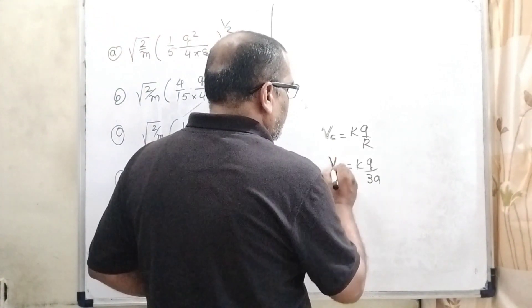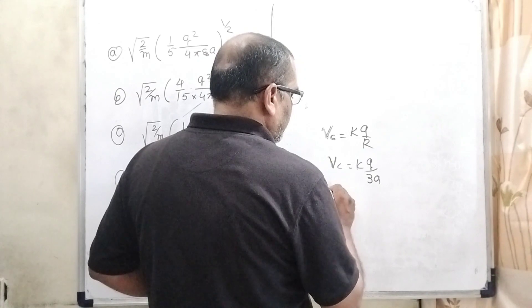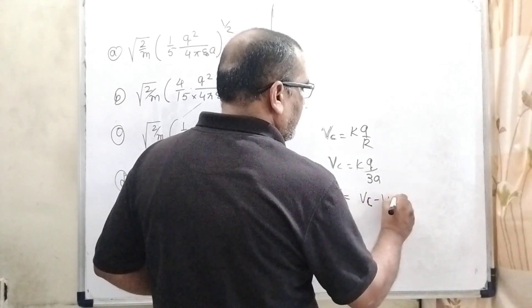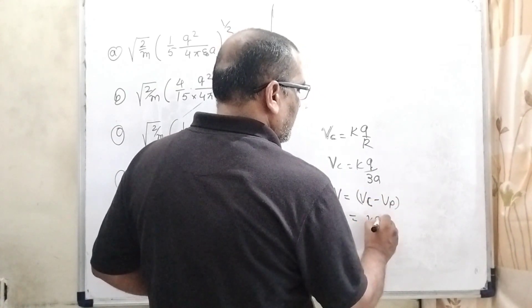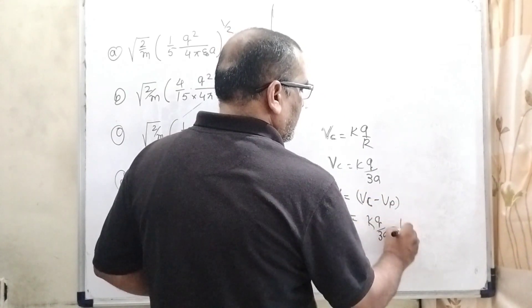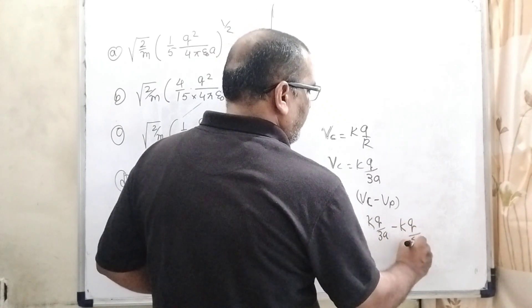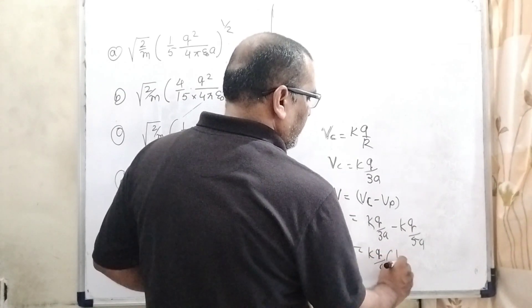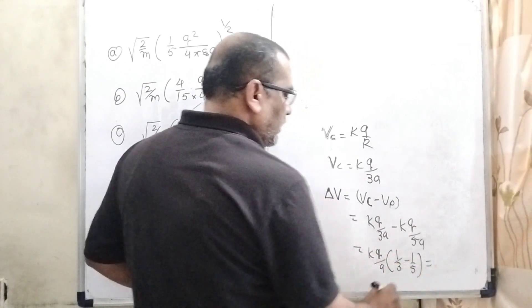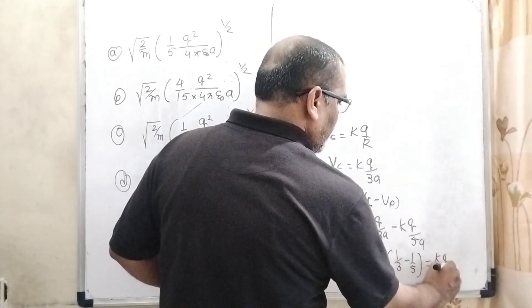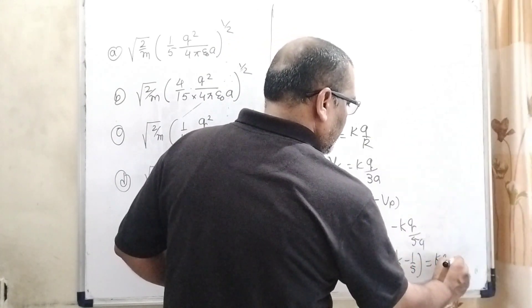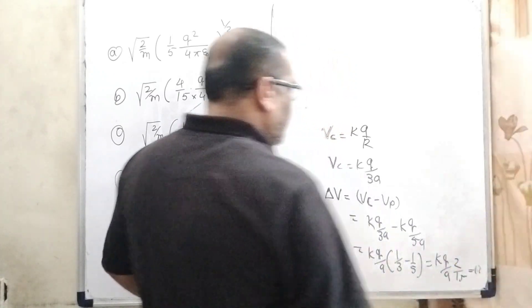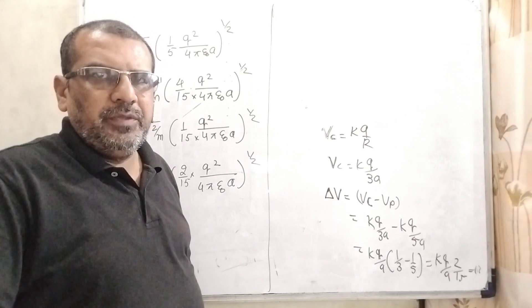Now, total change in potential energy delta V, that is Vc minus Vp. Here, what is Vc? kq by 3a minus kq by 5a. kq and a get common, then 1 by 3 minus 1 by 5. And what is the final result? kq by a times 2 by 15. Here we get change in potential difference.